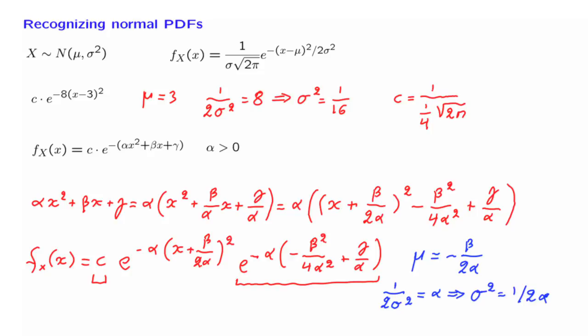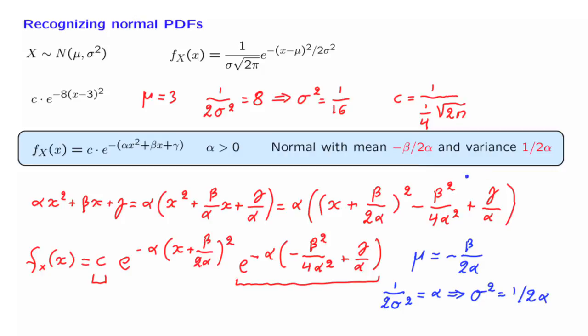So we have concluded that a PDF of this type is indeed a normal PDF. It has a mean equal to that value and a variance equal to that value. Actually, to figure out what the mean of this PDF is, we do not need to go through this whole exercise. Once we're convinced that this is a normal PDF, then we know that the mean is equal to the peak of the PDF.